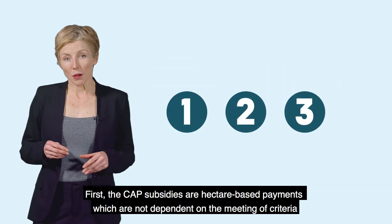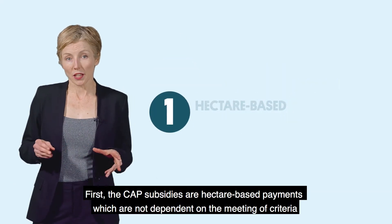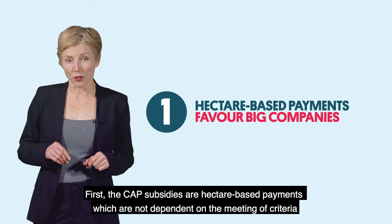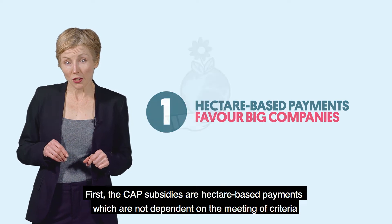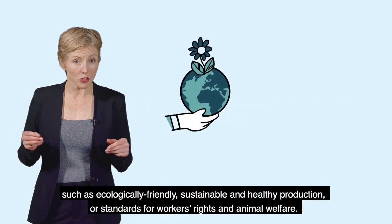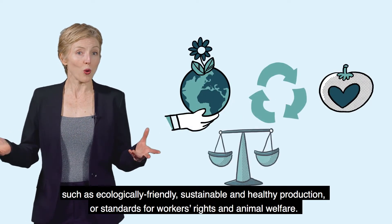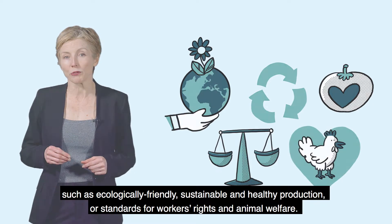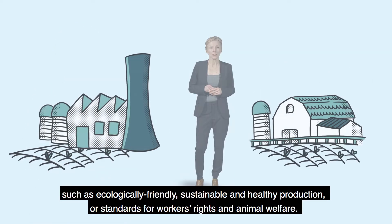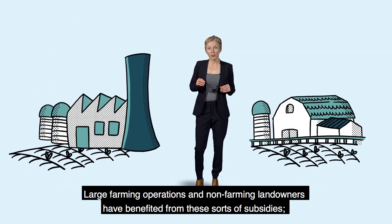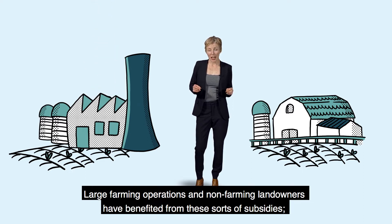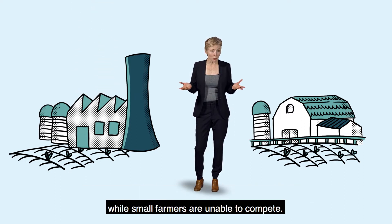Here's how. First, the CAP subsidies are hectare-based payments, which are not dependent on the meeting of criteria such as ecologically friendly, sustainable and healthy production, or standards for workers' rights and animal welfare. Large farming operations and non-farming landowners have benefitted from these sorts of subsidies, while small farmers are unable to compete.